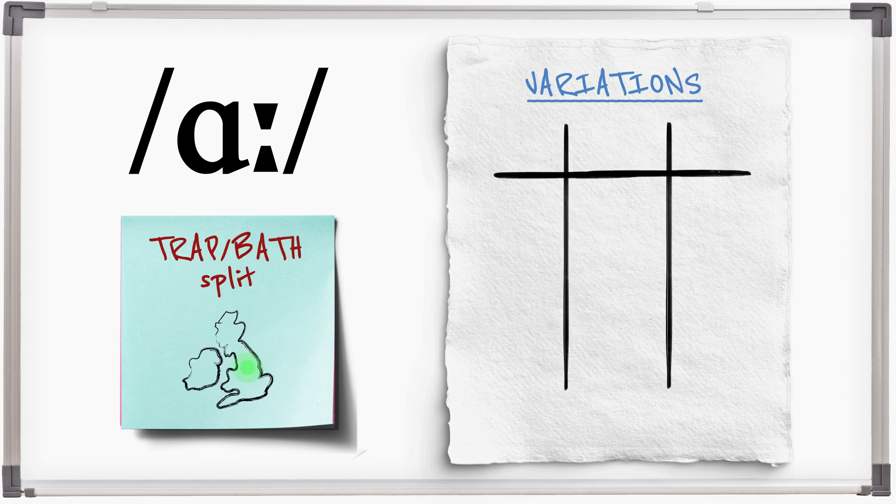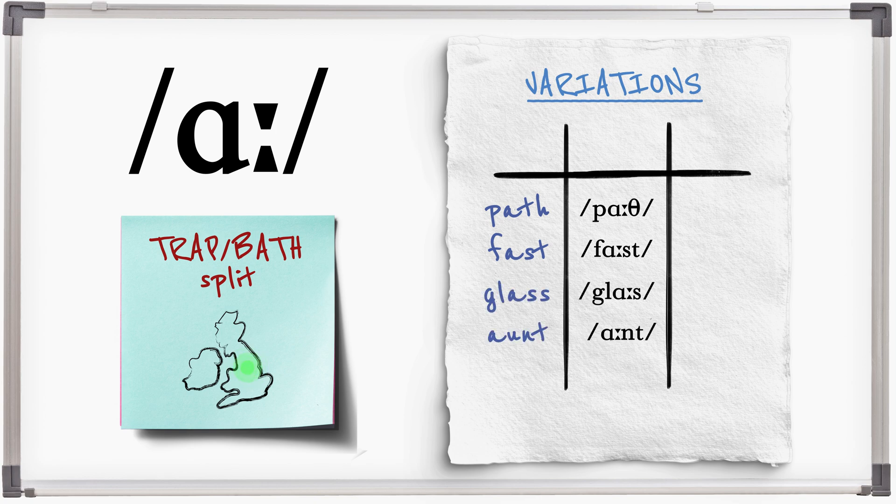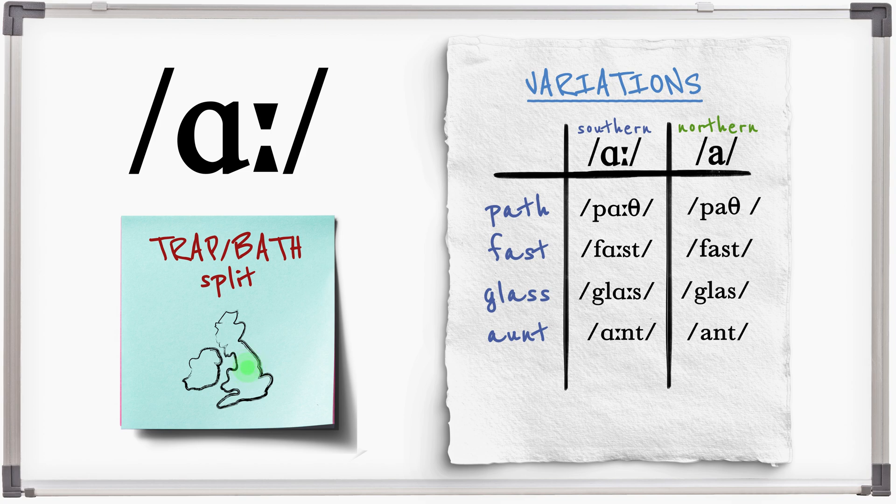Many words that are not spelt with R such as path, fast, glass, aunt are pronounced with short A in the northern half of England. Path, fast, glass, aunt. This is known as the trap-bath split.